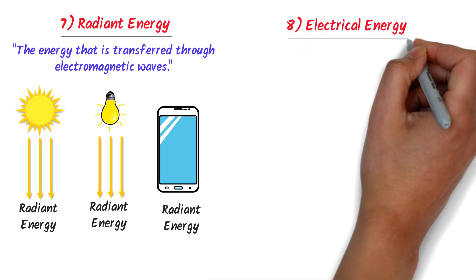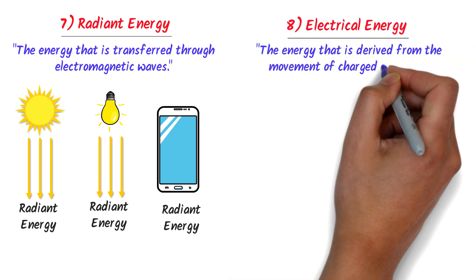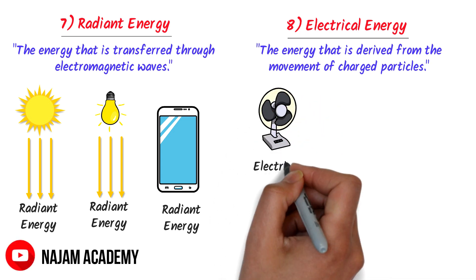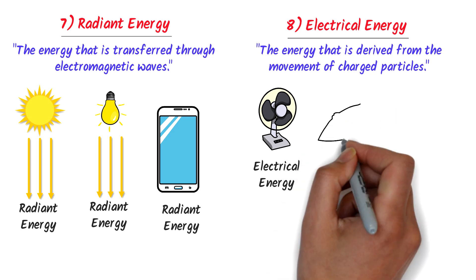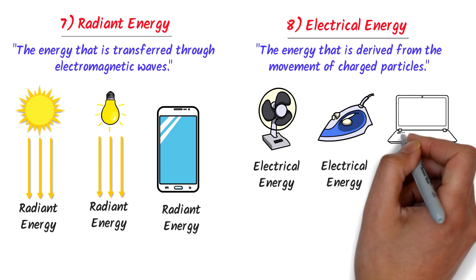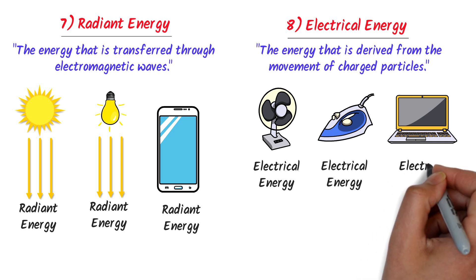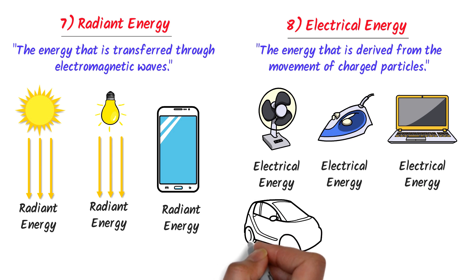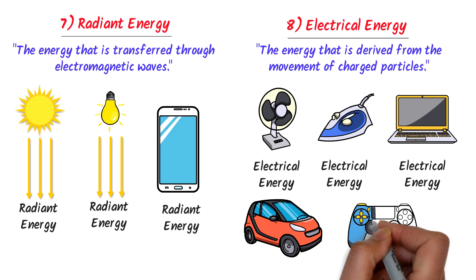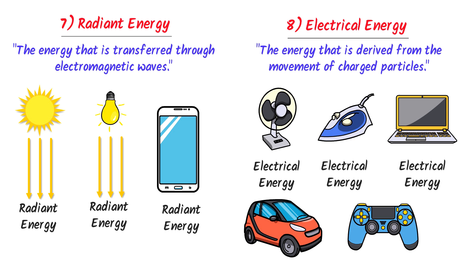The eighth form of energy is electrical energy. The energy that is derived from the movement of charged particles is called electrical energy. For example, the fan we use in our home uses electrical energy to run. Secondly, an electric iron uses electrical energy to iron our clothes. Thirdly, electronic devices like computers, TVs, and laptops use electrical energy to operate. Nowadays, electric cars use electrical energy as a fuel to run properly. In our daily life, we need electrical energy all the time to do our work — life without electrical energy seems impossible. Therefore, remember that electrical energy is generated due to the motion of charged particles.